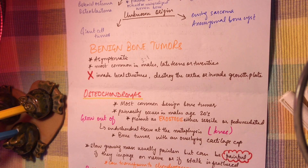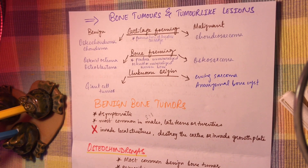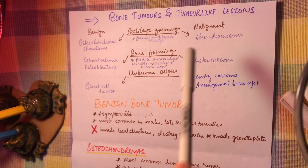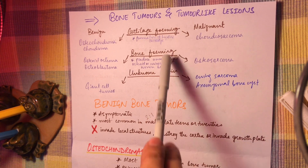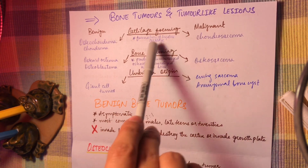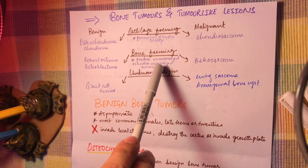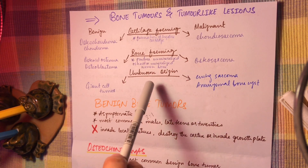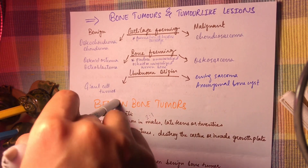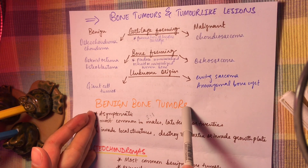Today we'll talk about bone tumors and tumor-like lesions. There are two kinds of tumors: benign and malignant. Primary bone tumors fall into three categories: cartilage-forming (those with formation of hyaline cartilage), bone-forming (those that produce unmineralized osteoid and mineralized woven bone), and those of unknown origin.